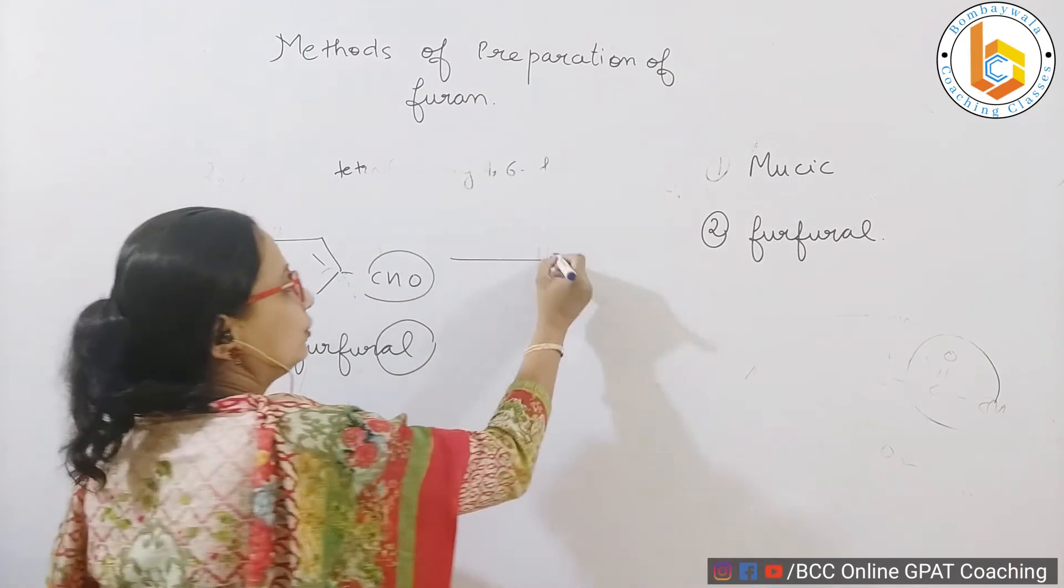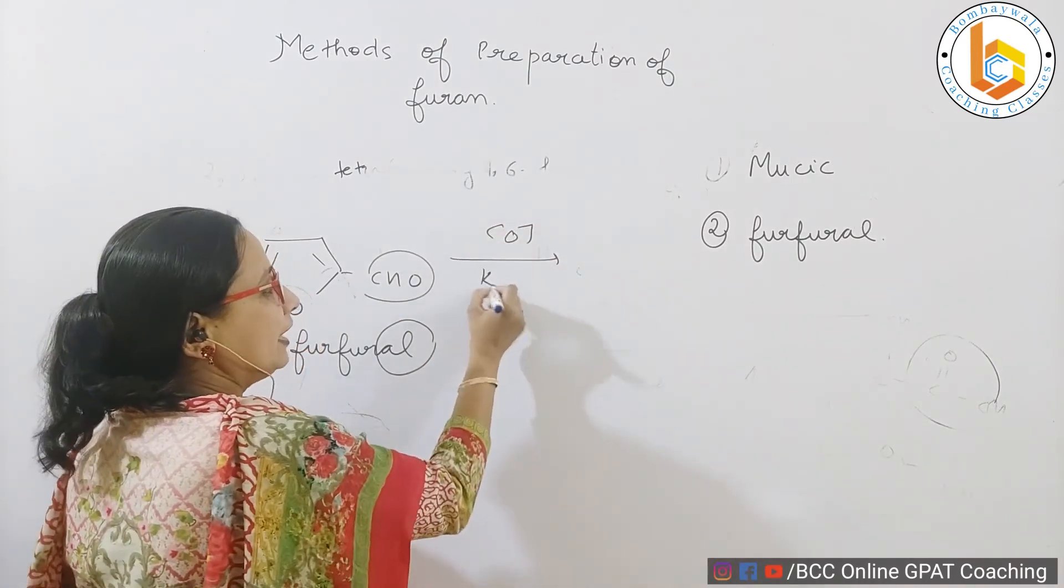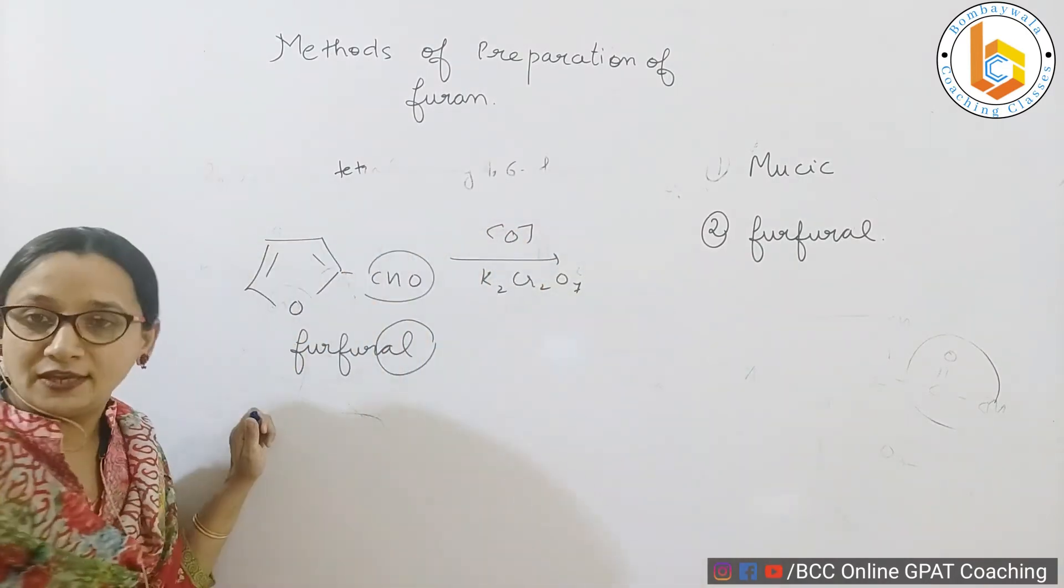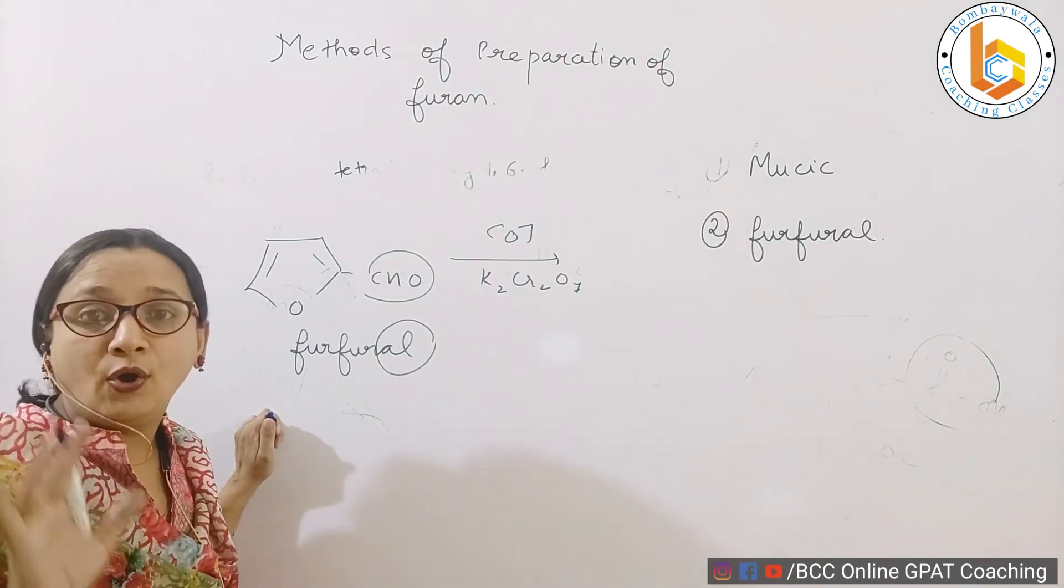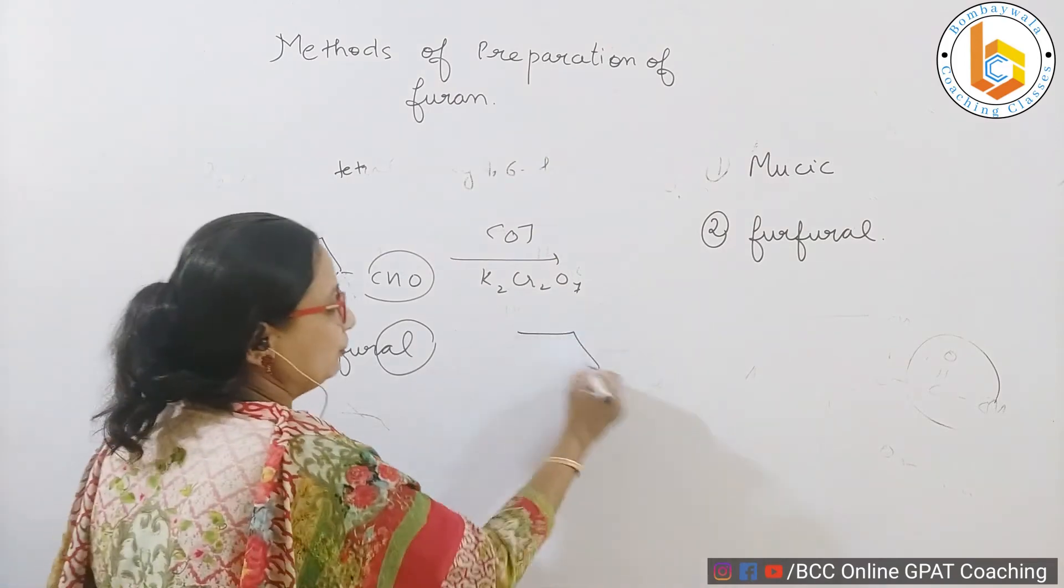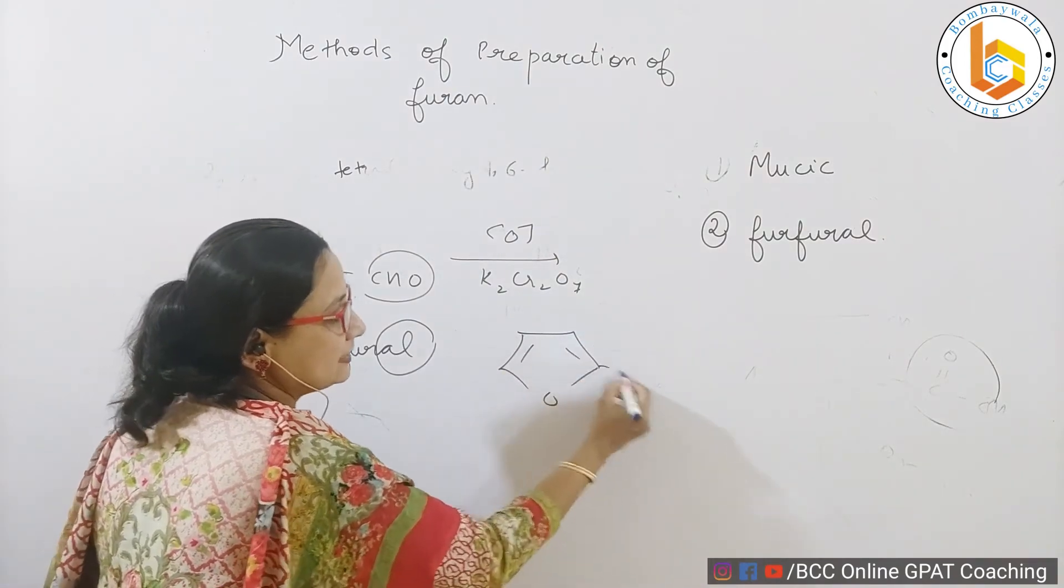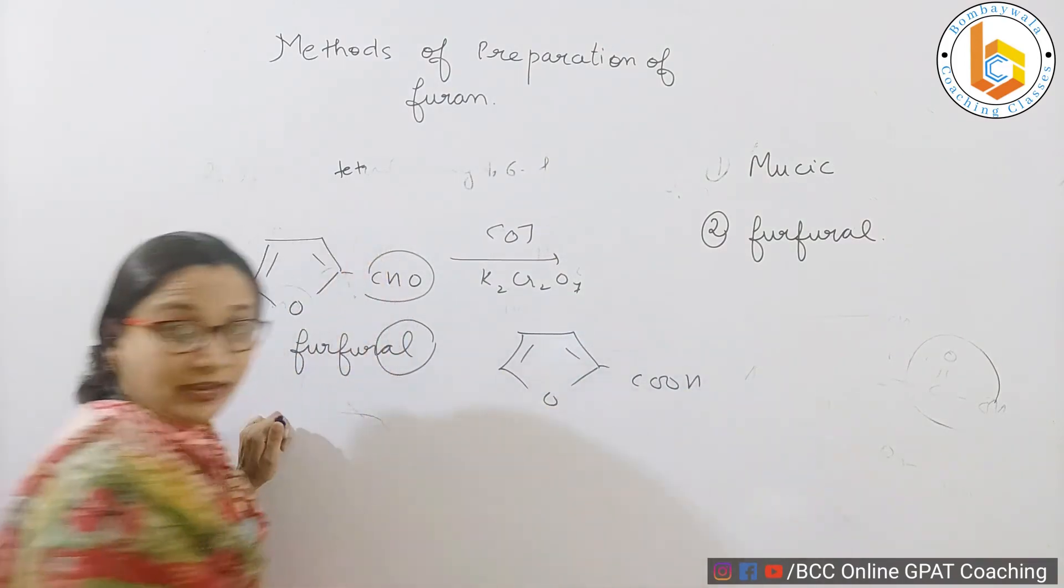Now what are we going to do? Undergo oxidation. Use K2Cr2O7 as an oxidizing agent. You know very well that aldehyde on oxidation converts into carboxylic acid. So you get nothing but a furoic acid.